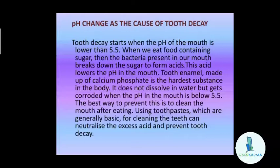Next comes pH change as the cause of tooth decay. Tooth decay is the damage caused to the teeth surface or enamel due to the lowering of pH in our mouth. Tooth decay starts when the pH of the mouth is lower than 5.5, meaning the mouth becomes acidic. When we eat food containing sugar, the bacteria present in our mouth break down the sugar to form acids, which lower the pH in the mouth.